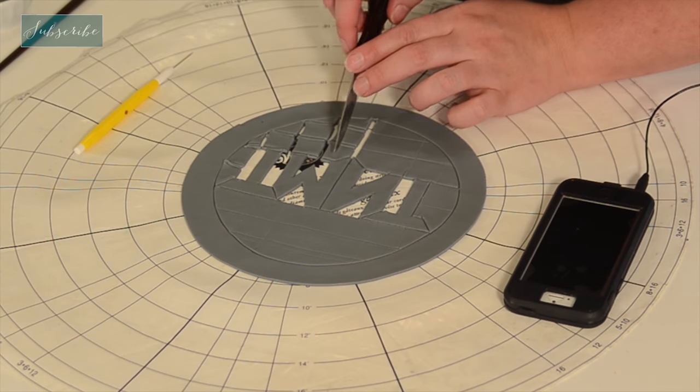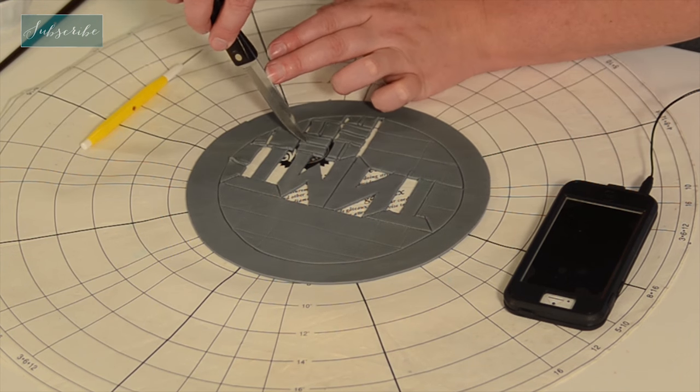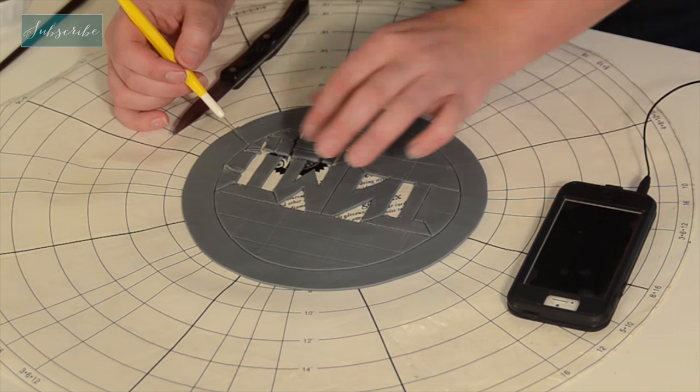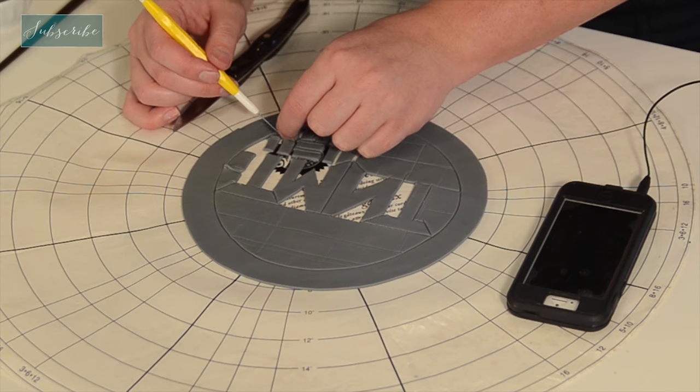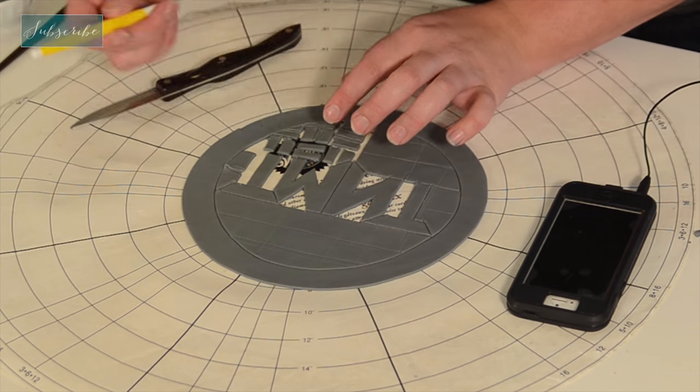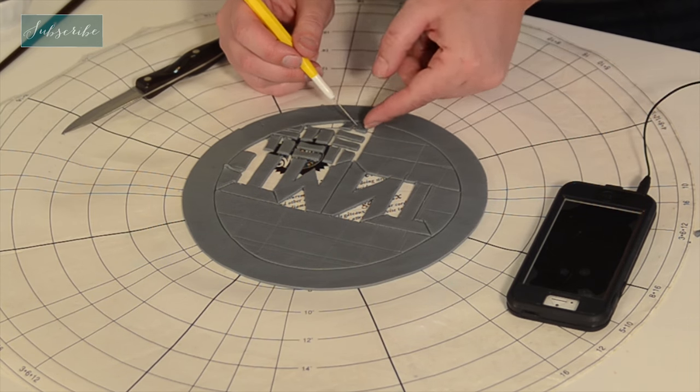Now you can see I'm weeding as I go, meaning I'm taking away all the excess I don't need. But I found that by weeding as I go, during this first quarter of the circle, I ended up accidentally moving some of those little rectangles that I didn't mean to. So for the rest of the circle, I actually ended up cutting it all first and then weeding at the very end, and it was a little easier to do. So that's the way I suggest doing it for you guys.